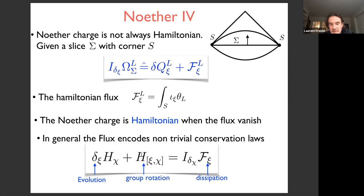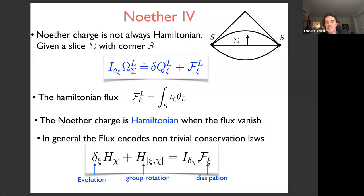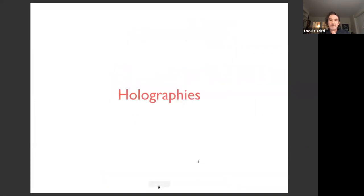One of the main theorems of Noether is that the charge is the generator of the symmetry. If there is flux, there's an extra dissipation term. When a vector field produces non-zero flux, this generalized conservation law with dissipation forms the basis of the memory effect. The main message: symmetry charges are non-zero at the corner, including the Hamiltonian, so the information is there.